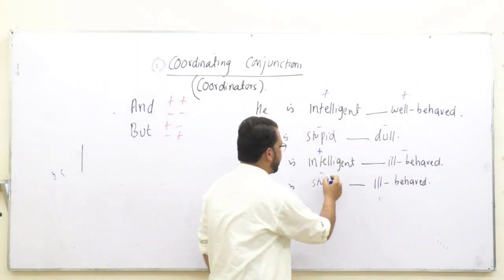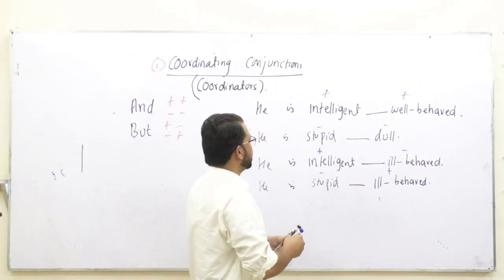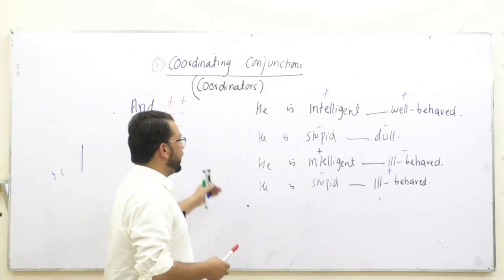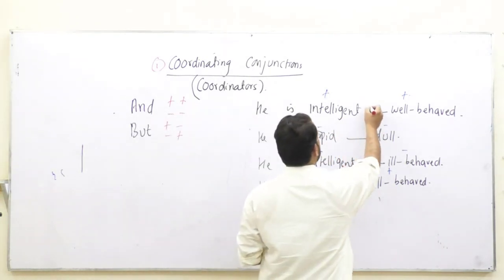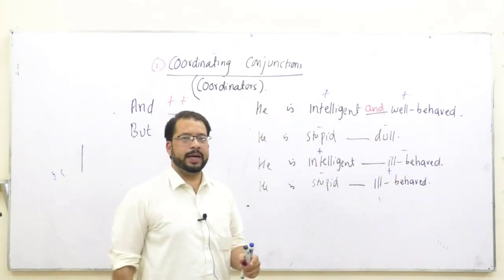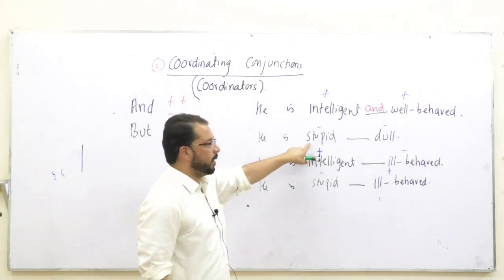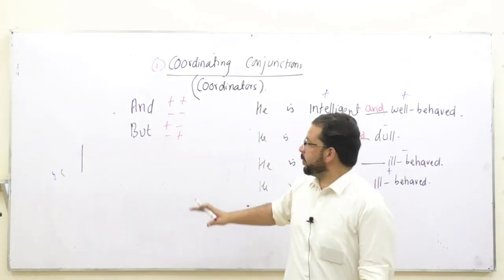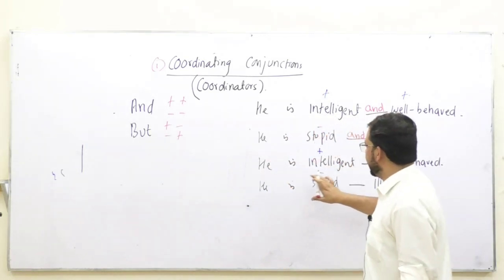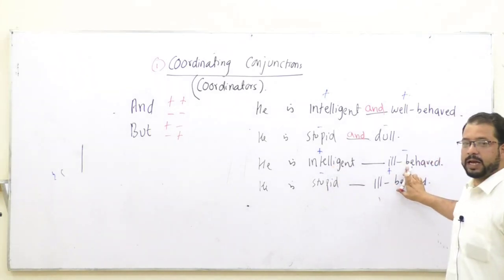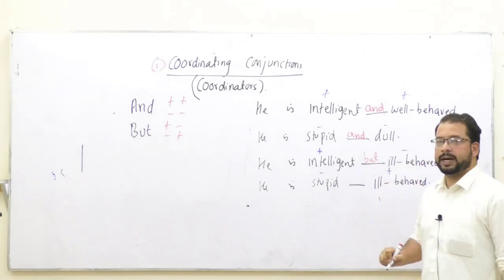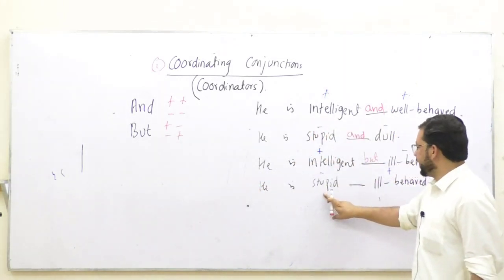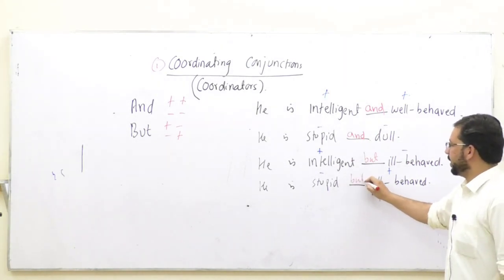You can see that in the first sentence we have two adjectives that are both positive things — intelligent and well-behaved — so we use 'and' for positive-positive. In the second sentence, stupid is a negative point and dull is a negative point, so we use 'and' for negative-negative. In the third sentence, intelligent is a positive point and ill-behaved is a negative point — we have positive-negative, so we use 'but'. Similarly, in the fourth sentence, stupid is negative and ill-behaved is also negative — wait, that gives negative-negative — so we use 'and'. That's why we have shown here how to put the correct conjunction in each sentence.